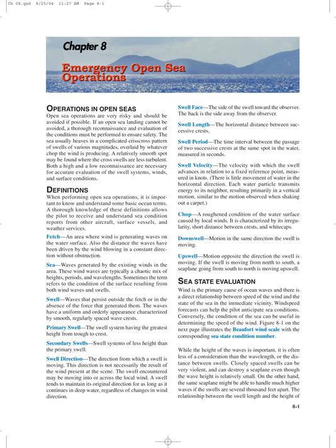Sea refers to waves generated by the existing winds in the area. These wind waves are typically a chaotic mix of heights, periods, and wavelengths. Sometimes the term refers to the condition of the surface resulting from both wind waves and swells. Swell refers to waves that persist outside the fetch or in the absence of the force that generated them. The waves have a uniform and orderly appearance characterized by smooth, regularly spaced wave crests. Primary swell is the swell system having the greatest height from trough to crest.